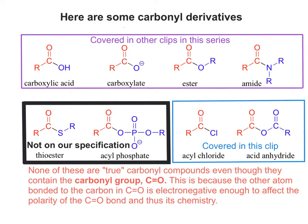It's worth pointing out that in each case they contain the carbonyl group, which is simply C double bond O. But they won't behave as true carbonyl compounds — they won't react with 2,4-DNP, and they won't react with Tollens reagent, because the other atom bonded to the carbon atom in C=O is too electronegative to allow the polarity of the C=O to remain as it was.